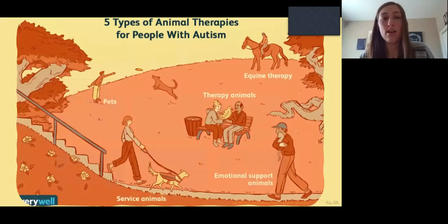This image was found from verywell.com, but it really paints a good picture of the types of animal therapies that would be beneficial for children or adults with autism spectrum disorder. The first one is service animals. Rudy 2020 defines service animals as trained animals that help individuals with ASD navigate space, calm down, and avoid negative interactions.